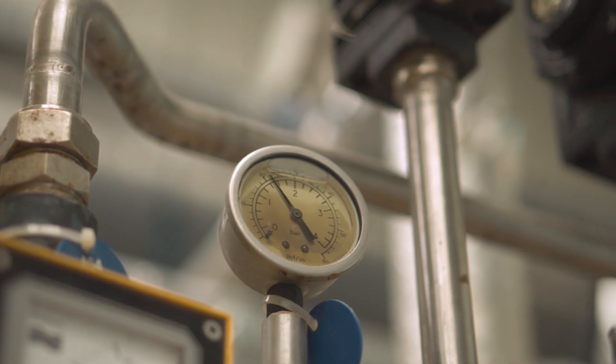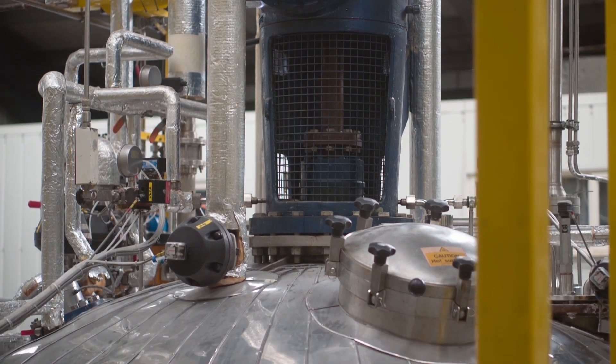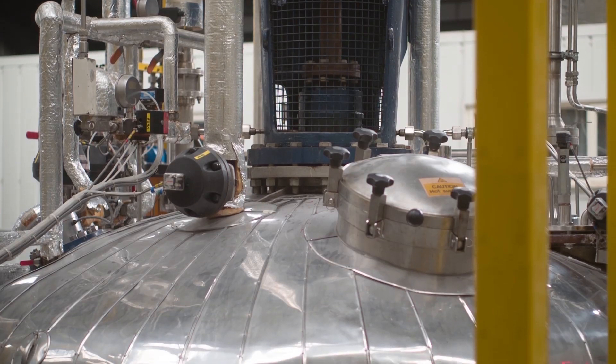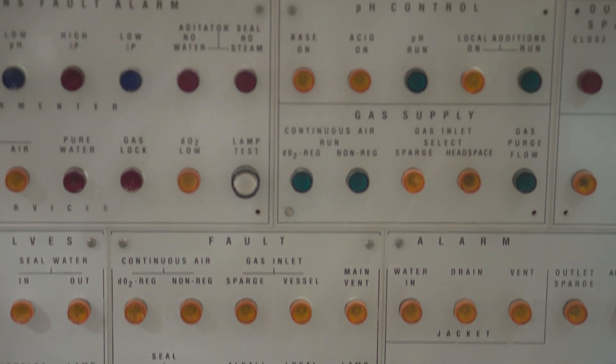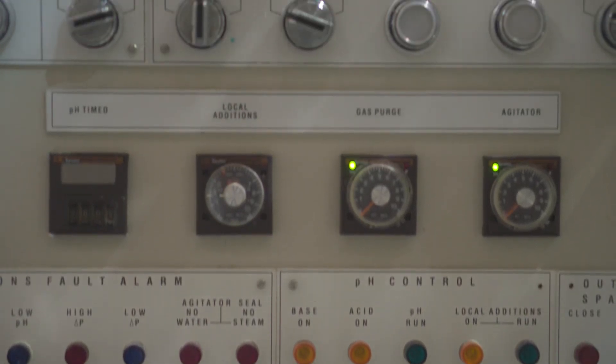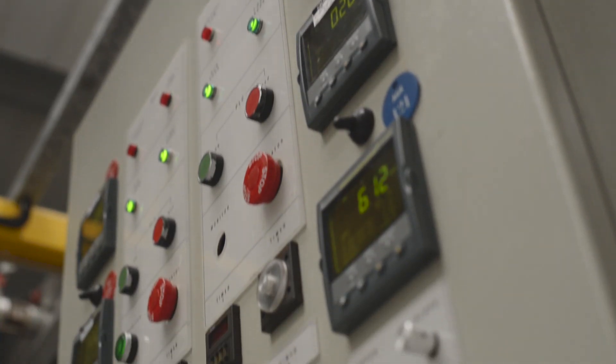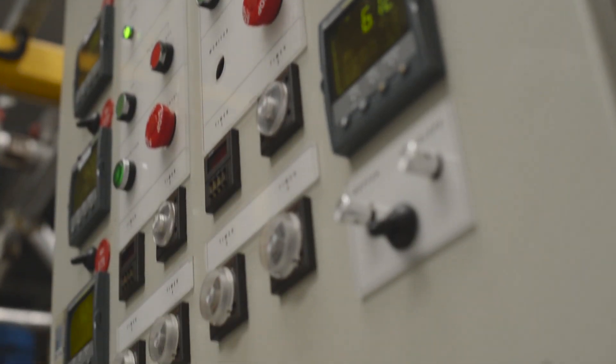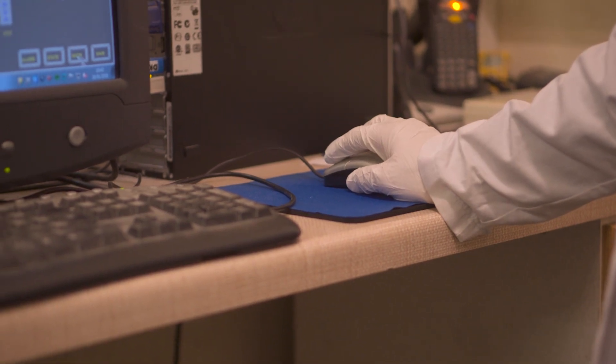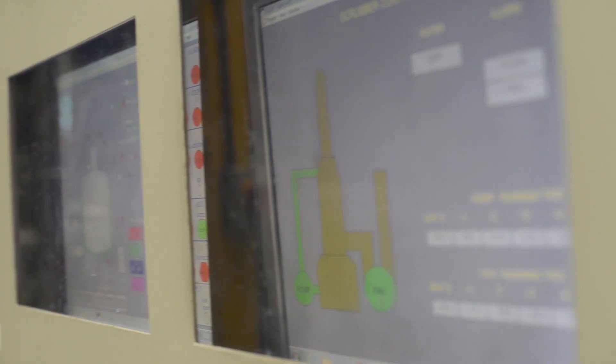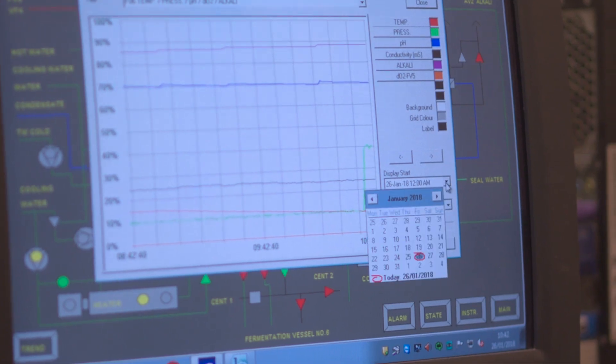Fermenters are run at set temperatures, pH levels, and oxygen levels based on the characteristics of the bacterium being grown at the time. The temperature, pH, and oxygen are controlled automatically via computer control units. The goal is to produce bacteria in their most energetic state and these parameters are crucial. The fermentation time is dependent on the bacterium being produced, but it generally takes 8 to 12 hours, although some bacterium can take days.